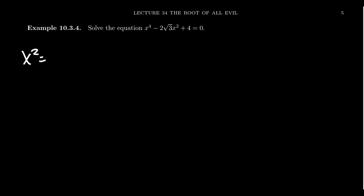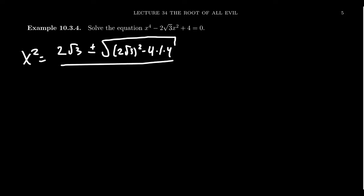So x squared equals negative b, which gives us 2 root 3, plus or minus the square root of b squared minus 4ac all over 2a. Let's simplify the discriminant a little bit before we go forward. When you square 2 root 3, 2 squared is 4, the square root of 3 squared is 3, so 4 times 3 is 12.